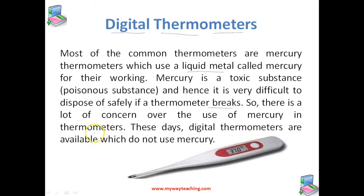There is a lot of concern over the use of mercury in thermometers. So in order to solve this problem, nowadays we are using digital thermometers. In digital thermometers there is no use of mercury — they work without mercury — so in order to avoid the problems caused by mercury, we are switching to digital thermometers.